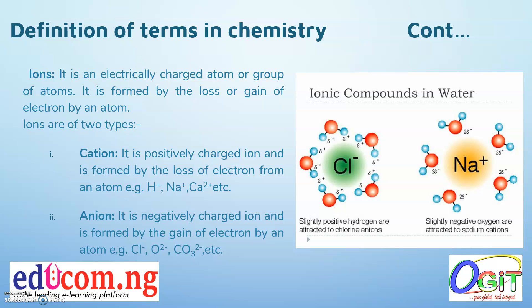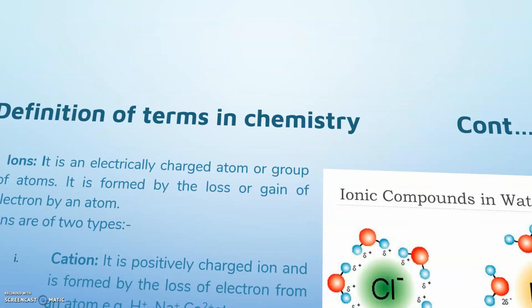The cation is represented with a positive sign at the top right corner of the symbol. An anion is a negatively charged ion formed by the gain of electrons by an atom, and is represented with a negative sign at the top right corner of the symbol.